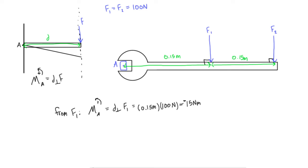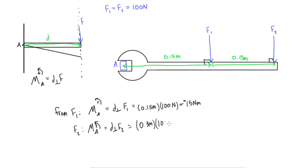Now from F2: the moment about A, with counterclockwise as positive, equals d_perp times the magnitude of F2: 0.3 meters times 100 newtons. This equals negative 30 newton meters. It's directly proportional to the perpendicular distance — F2 is twice as far from point A, so it creates twice the moment.